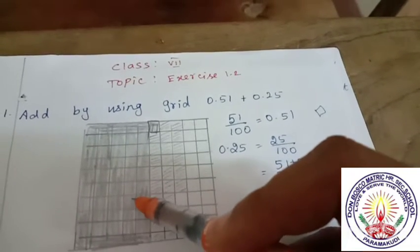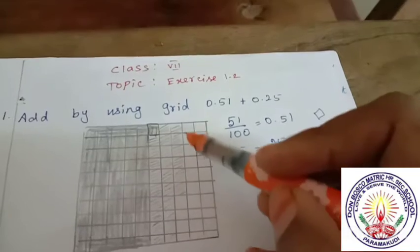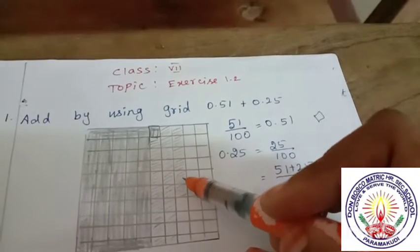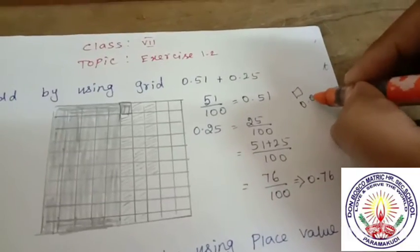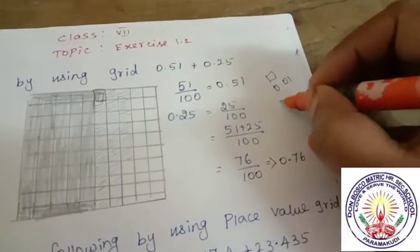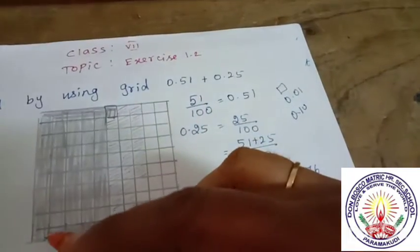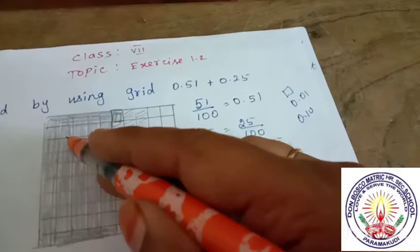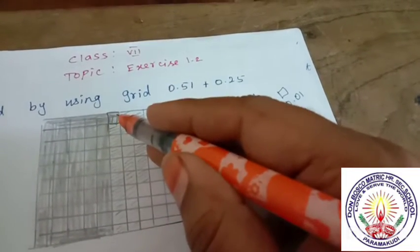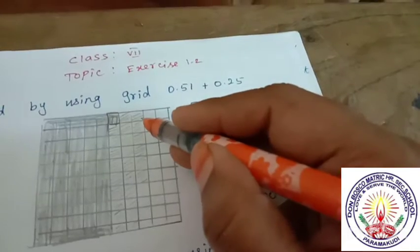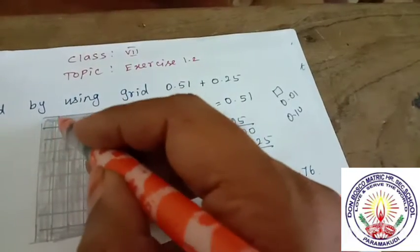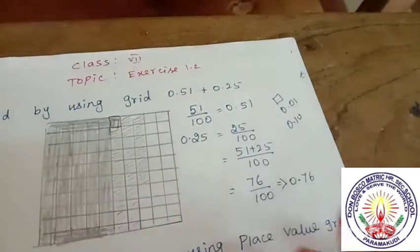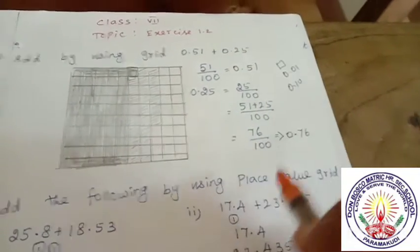Counting to verify: 10, 20, 30, 40, 50, 60, 70, 71, 72, 73, 74, 75, 76. So answer is 0.76. One square value is 0.01. How to add 0.76.